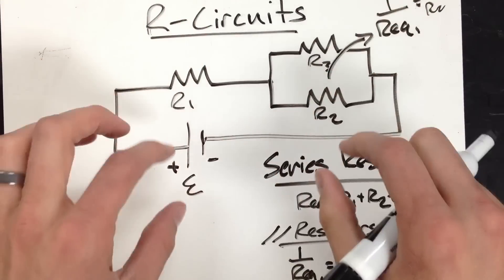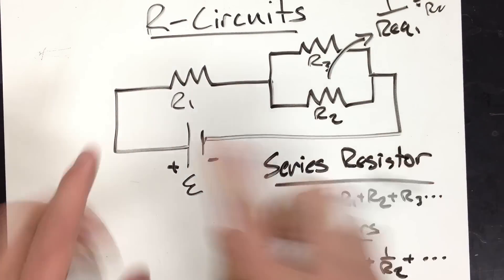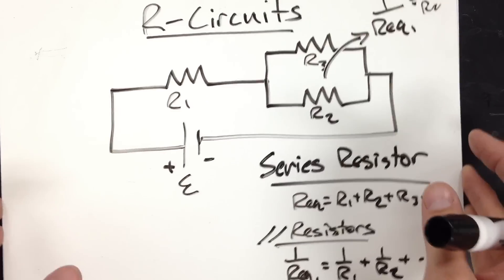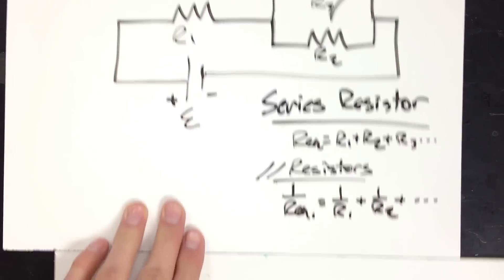Then simplify that circuit down. Then you end up with two resistors that are in series. So it would look something kind of like this.